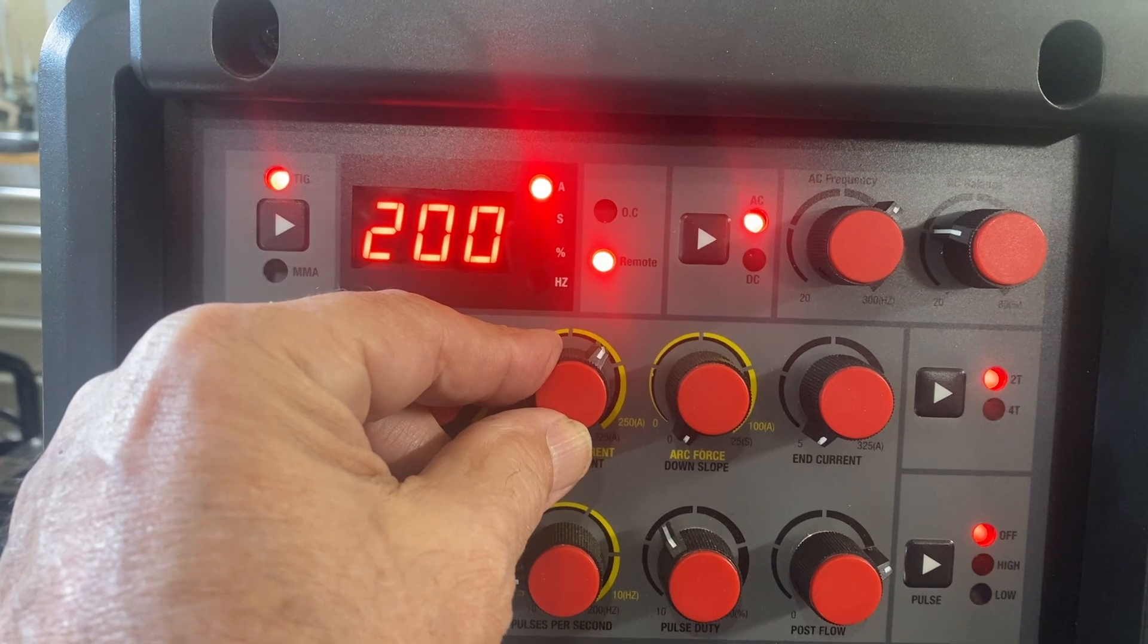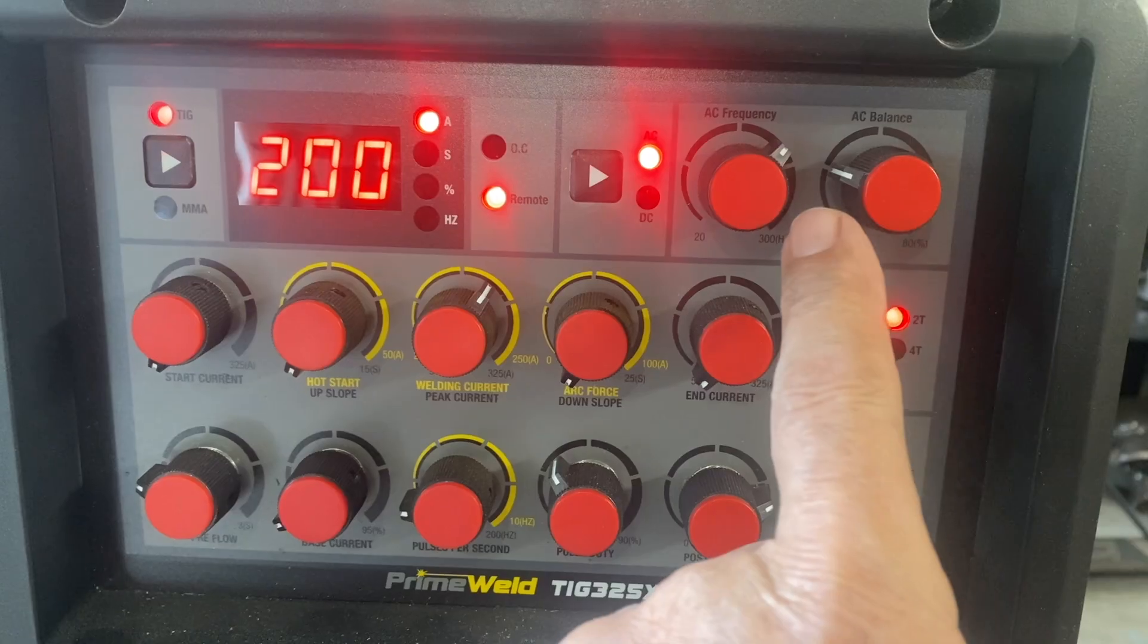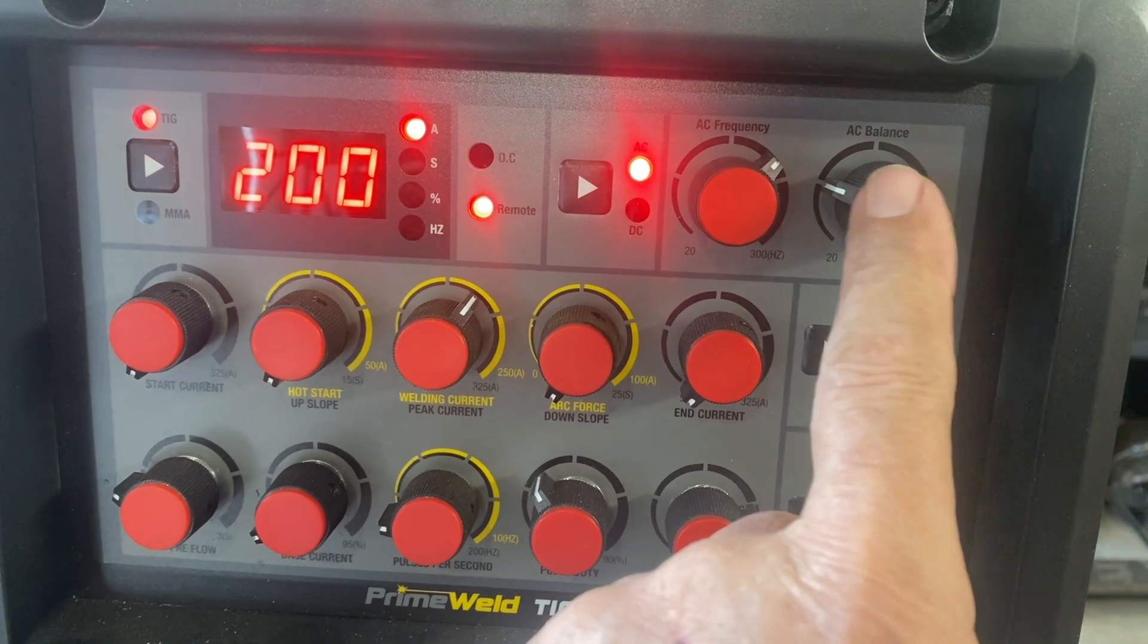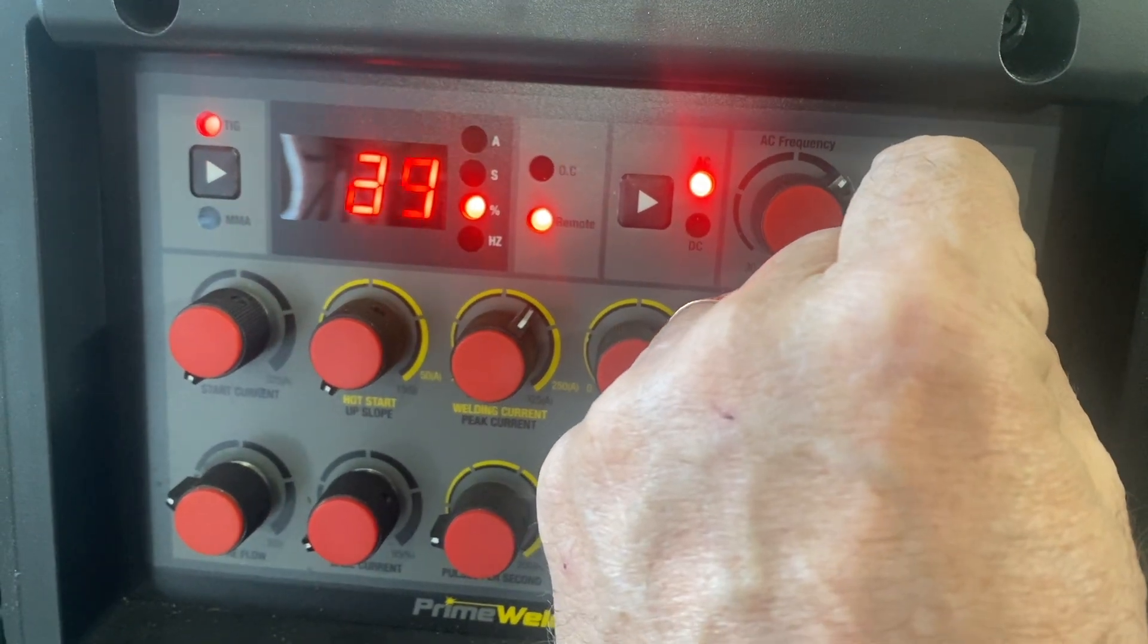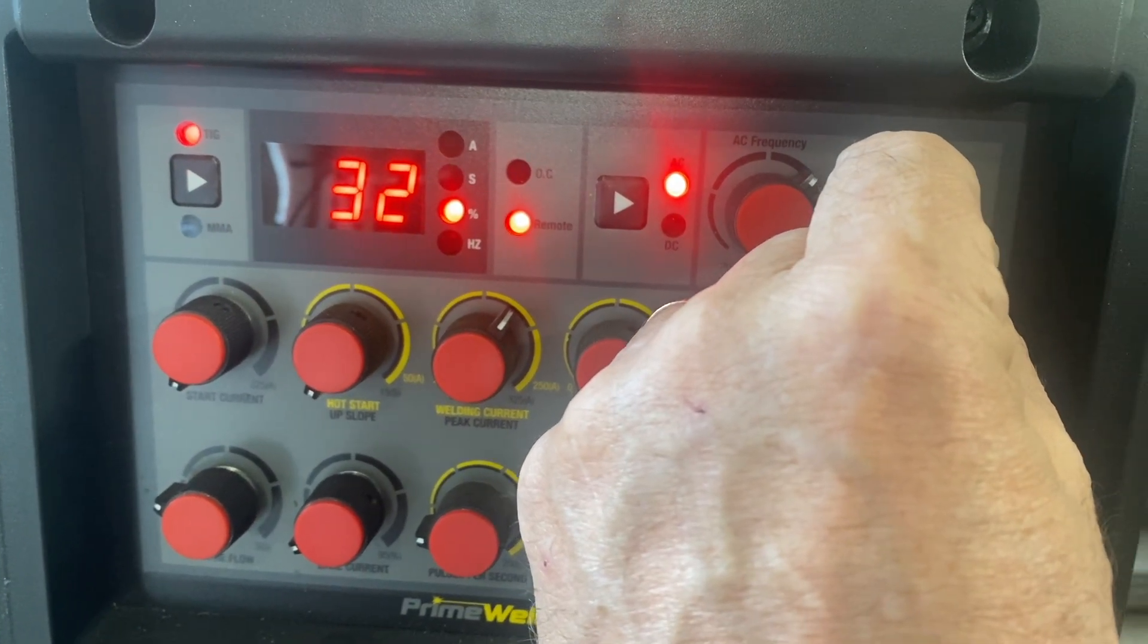Let's do the same tip now with AC at 200 amps and see if we get any arc wandering there. I'm setting the amperage to 200 amps. I'm going full pedal and the AC balance I'm going to set to 32% cleaning which is a pretty good all-around setting.